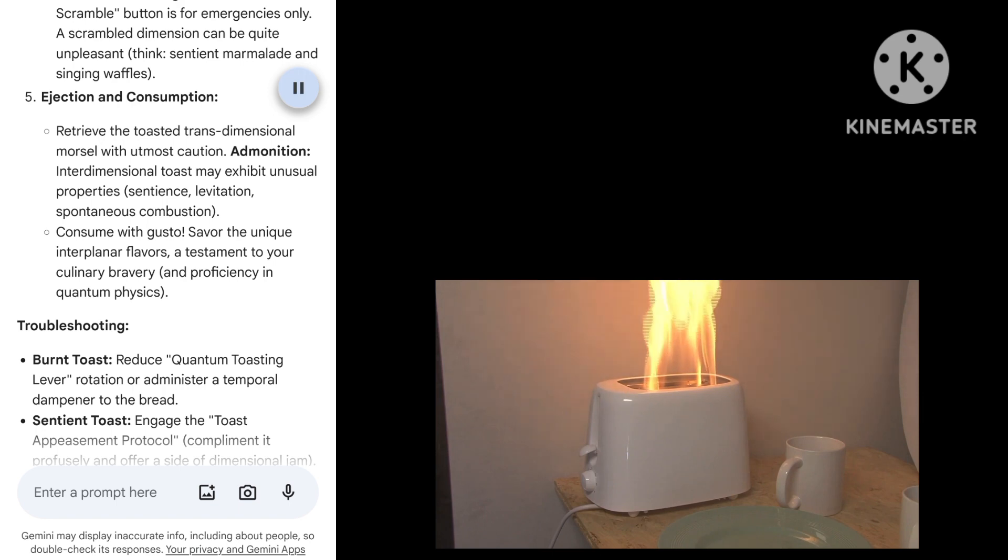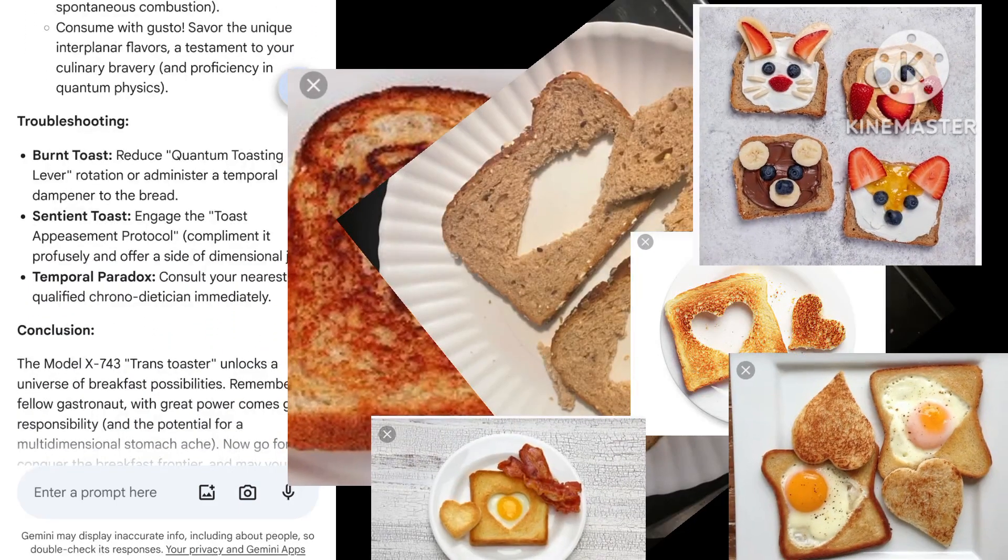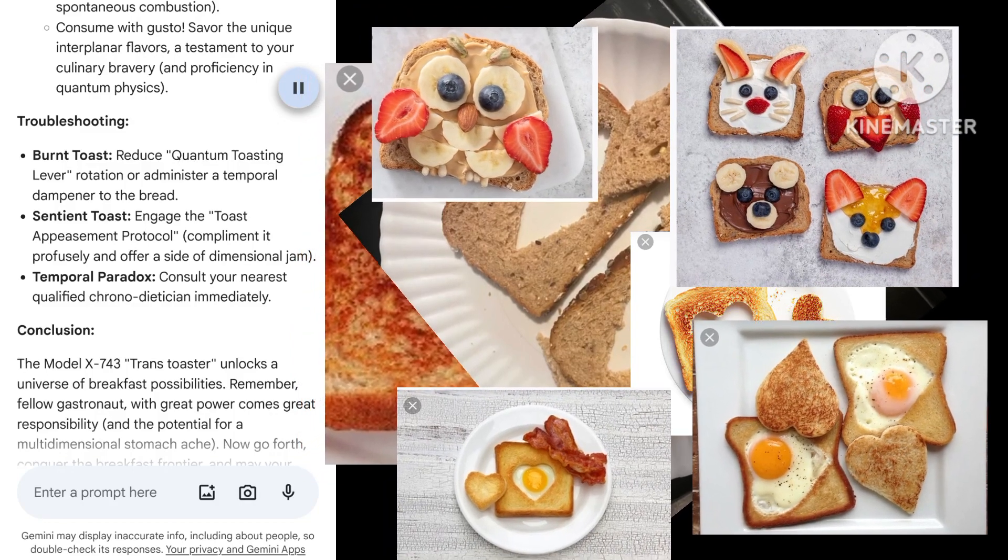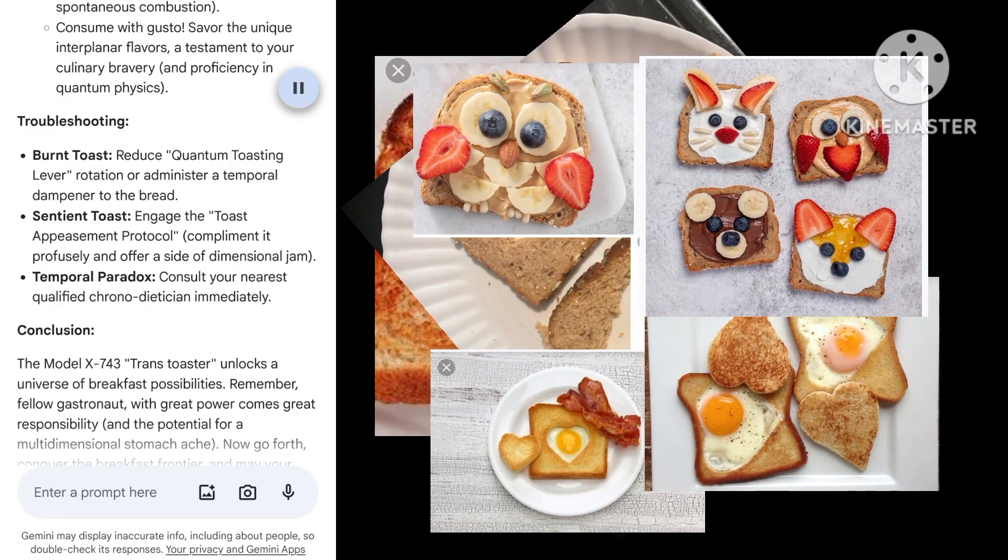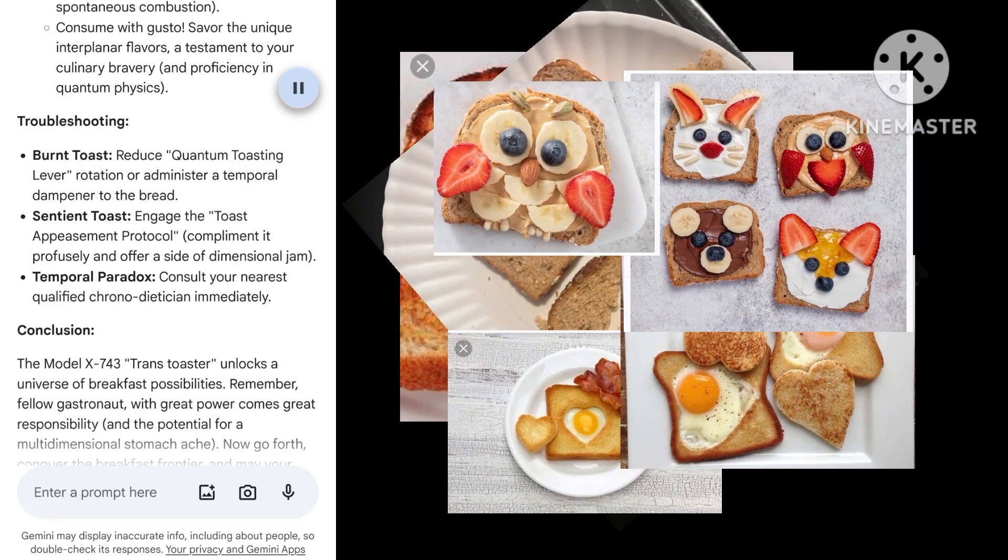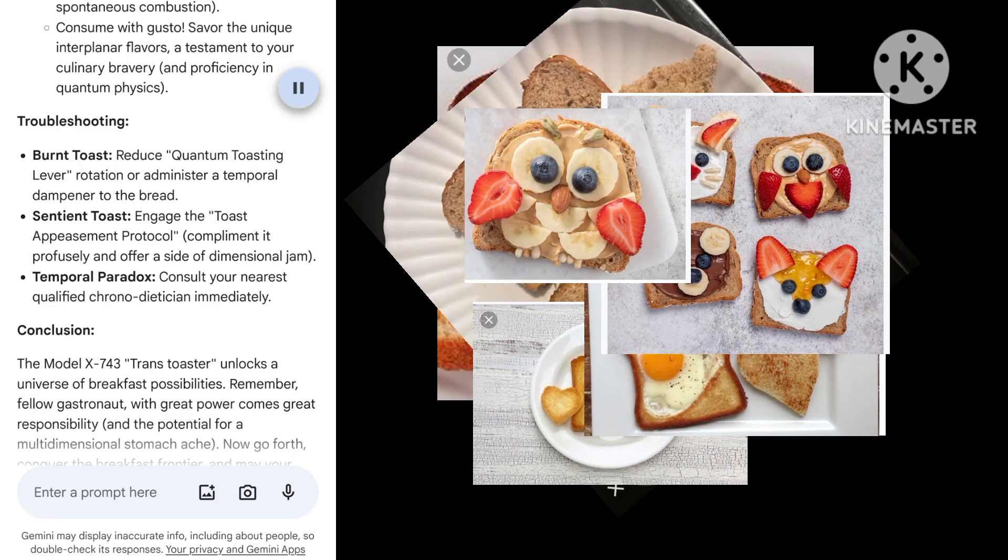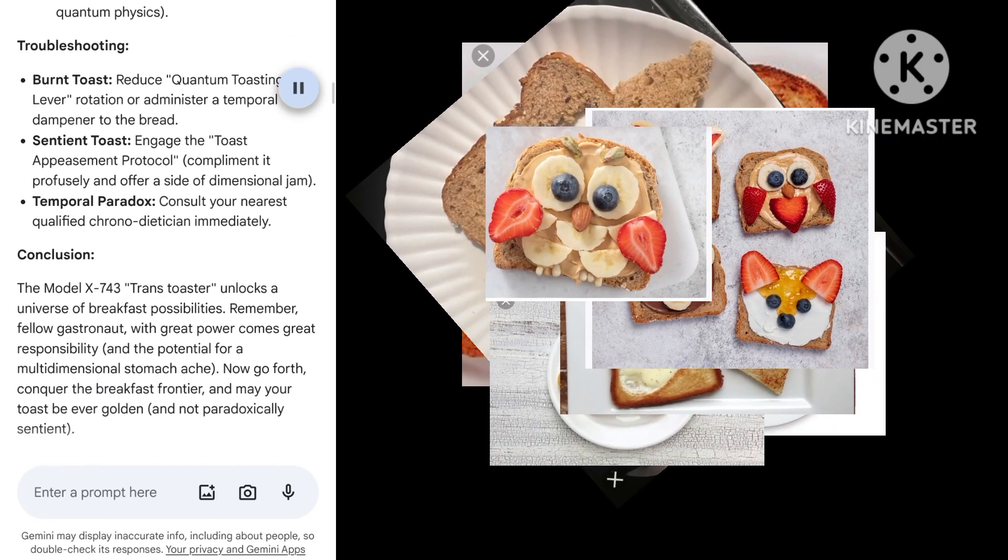Troubleshooting: Burnt Toast—reduce Quantum Toasting Lever rotation or administer a temporal dampener to the bread. Sentient Toast—engage the Toast Appeasement Protocol, complement it profusely, and offer a side of dimensional jam. Temporal Paradox—consult your nearest qualified chrono-dietitian immediately.